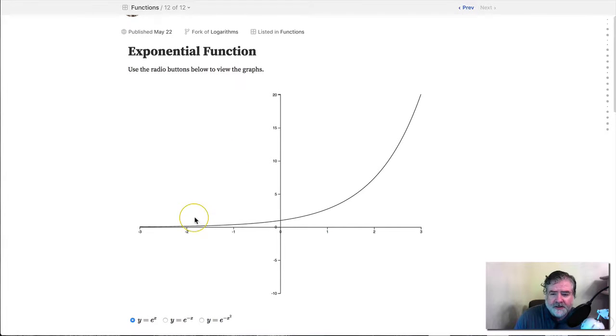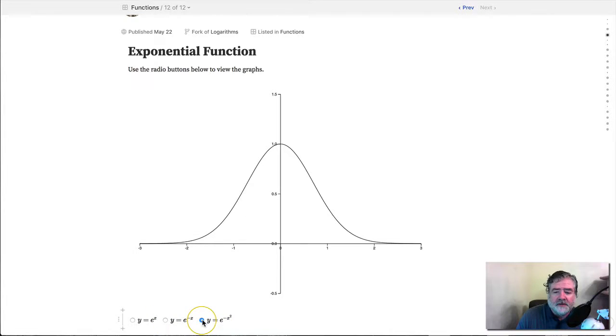In the first part, I just have three important forms of it: e to the x, what happens if you put a negative in front of the x, and then if you keep a negative sign there but square x, what happens when you get that famous bell-shaped curve for probability and statistics.